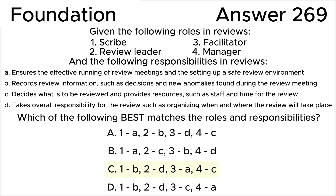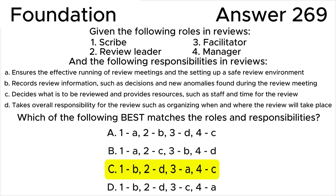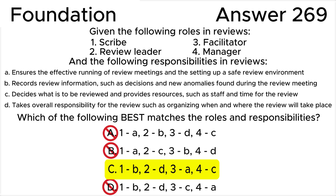In summary, all of the above leads us to the correct answer C: one is B, two is D, three is A, four is C.